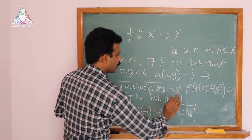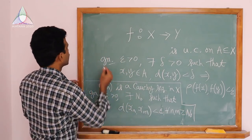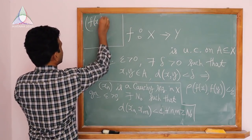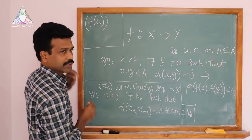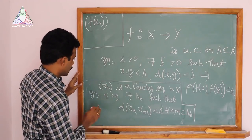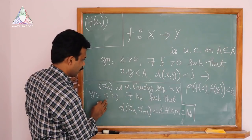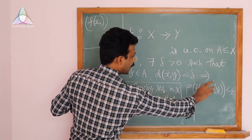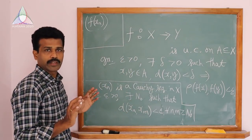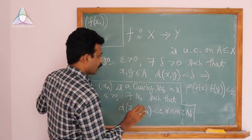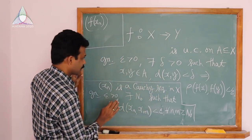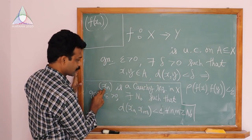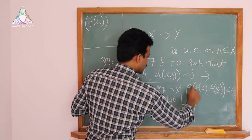We would like to show the image of the sequence, which is f(xn), is Cauchy. To prove that, for the same epsilon, we need to show rho(f(xn), f(xm)) is less than epsilon for all n, m greater than or equal to some n0. We apply the uniform continuity of f on A and the fact that the given sequence is Cauchy.